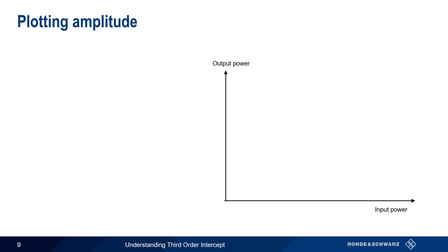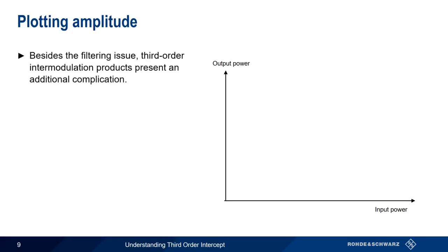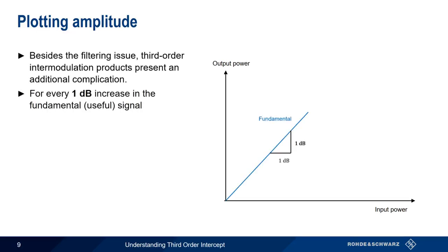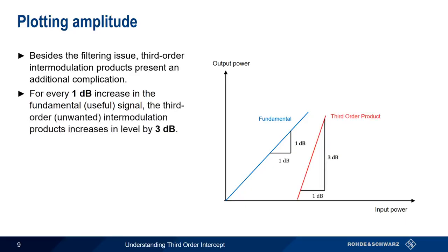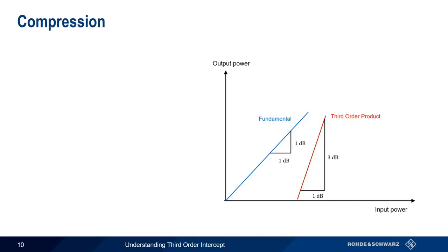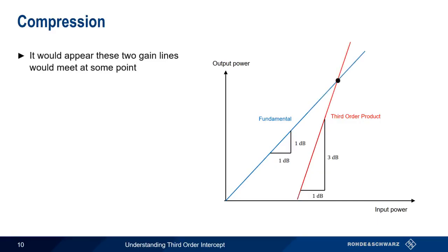In addition to being difficult to filter out, there's another complication when it comes to third-order intermodulation products. Namely, for every 1 dB increase in the fundamentals, that is the desired or useful signals, the undesired third-order intermodulation products increase in amplitude by 3 dB. In other words, the troublesome third-order products aren't just close in frequency to the fundamentals, but they also grow in amplitude much more quickly than the fundamentals. Looking at the slopes of the two lines, the fundamental and the third-order product, it would appear that these lines would meet at some point — that is, at some input power, the level of the third-order products would match, and eventually exceed, the level of the fundamental signals.